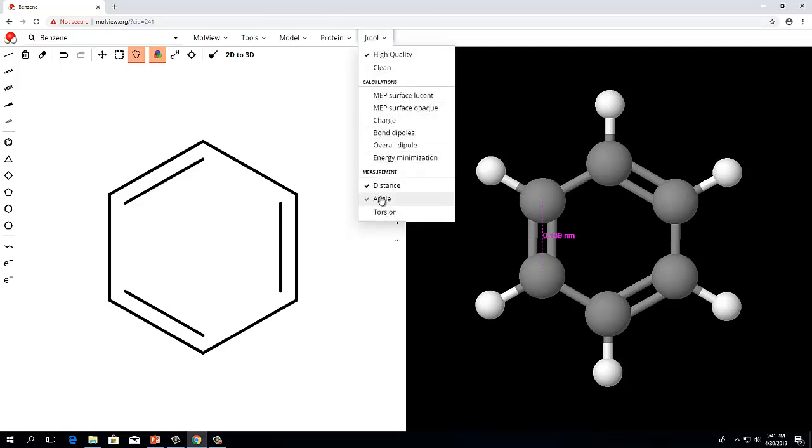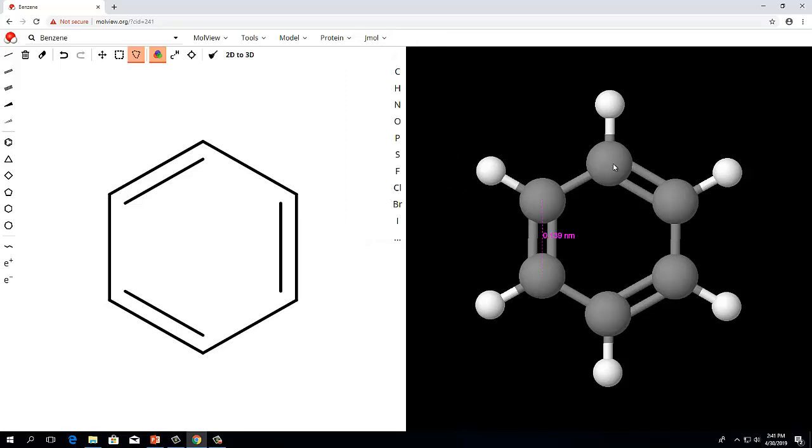To measure a bond angle, you would choose Angle under the JMOL menu, then select the three atoms that define the angle with the middle atom representing the vertex of the angle. Again, take care that the program properly registers your choice of an atom as you select the bond angle you wish to measure.